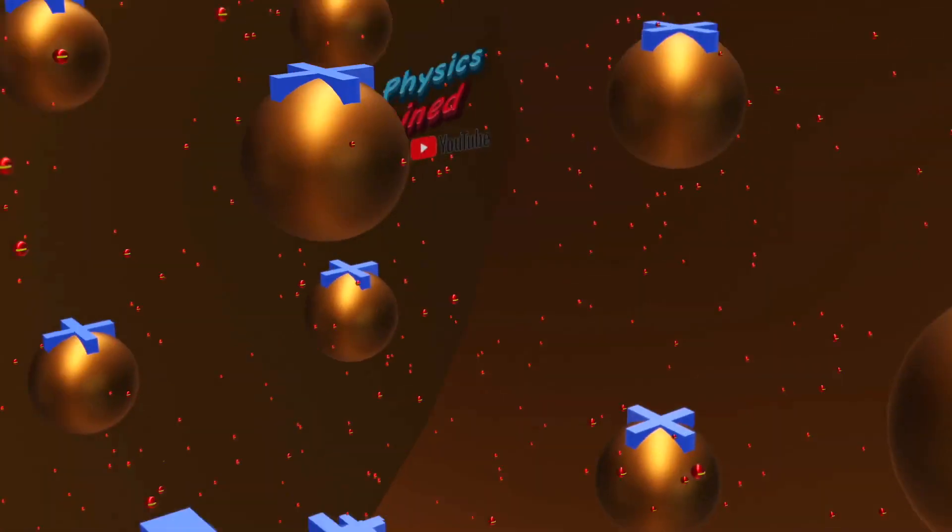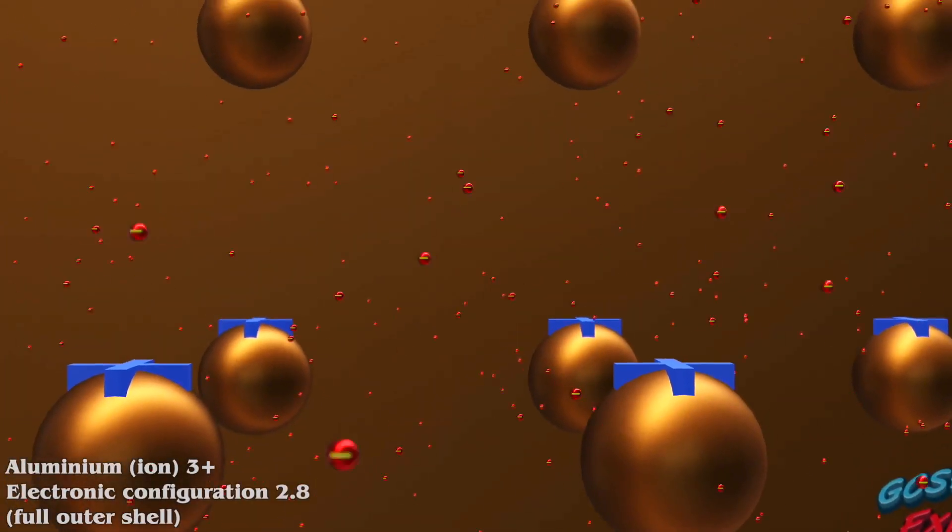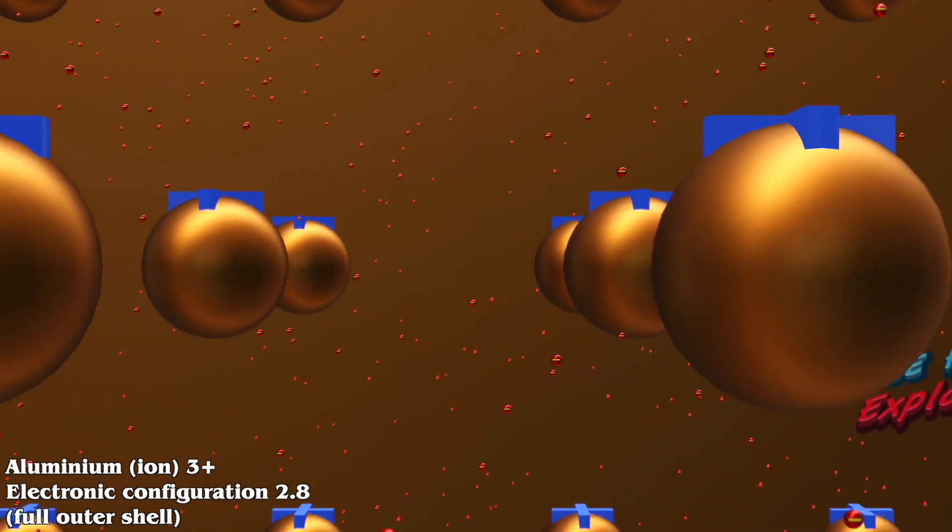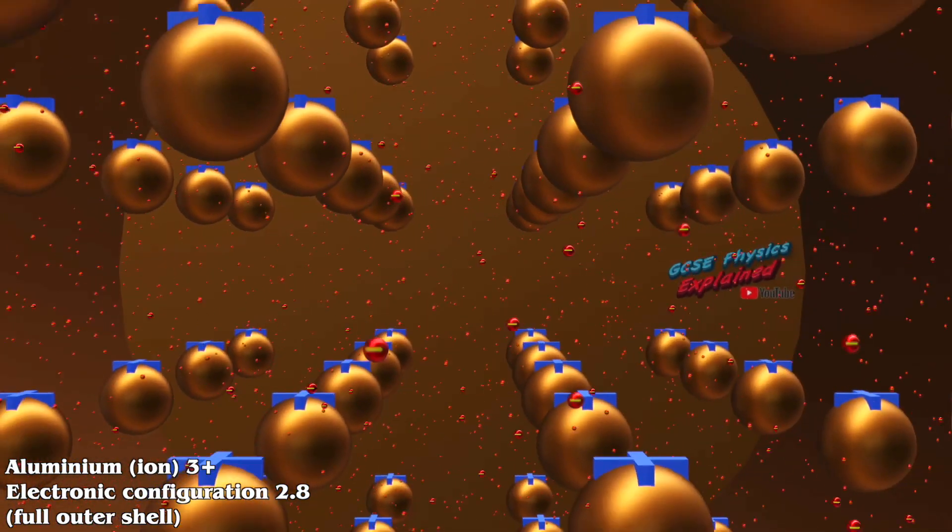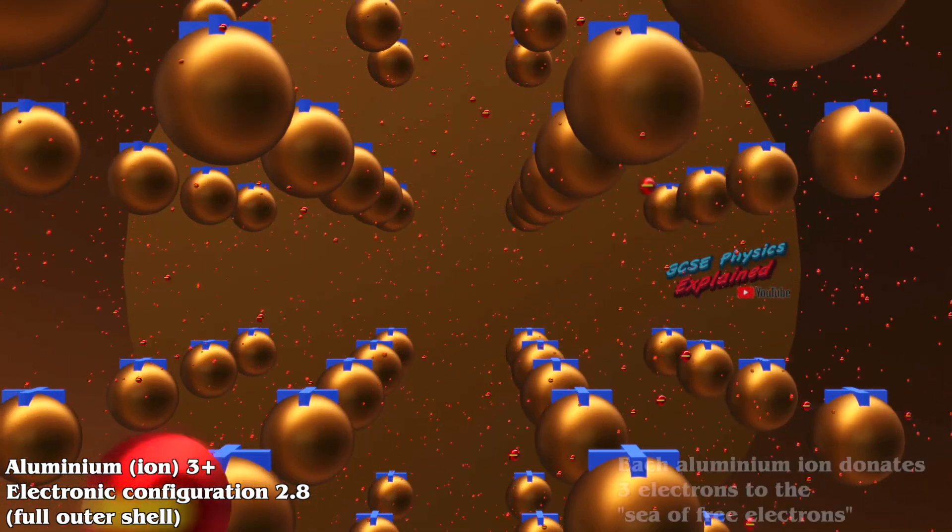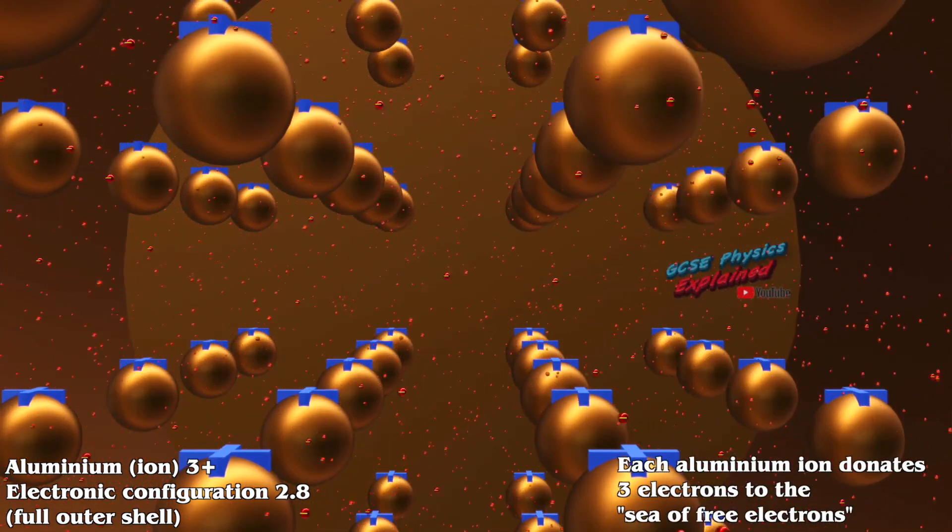The metal ions have full outer shells and so are stable. The positive metal ions are surrounded by a sea of free negative electrons which hold them in place.